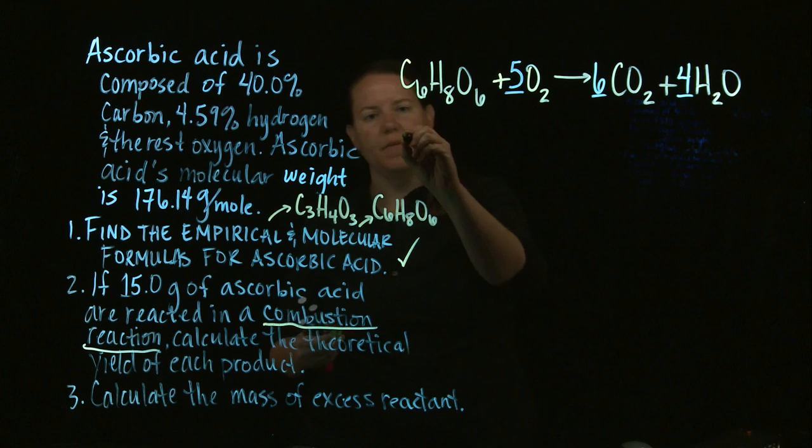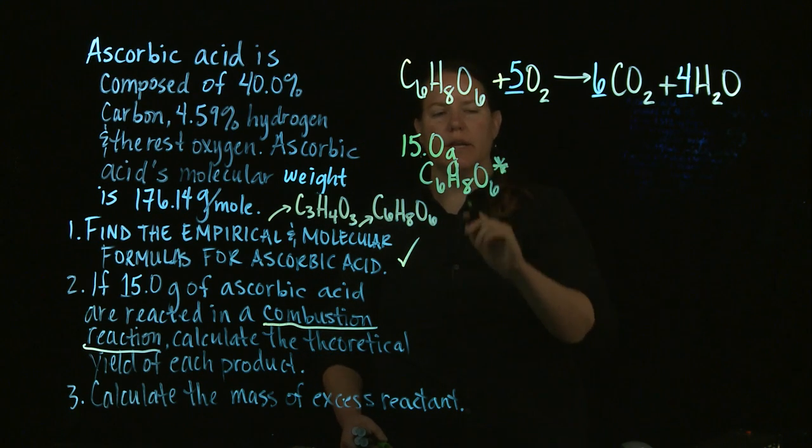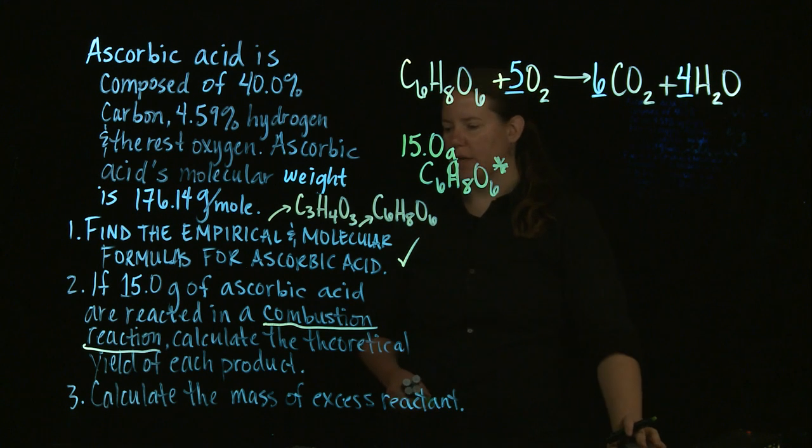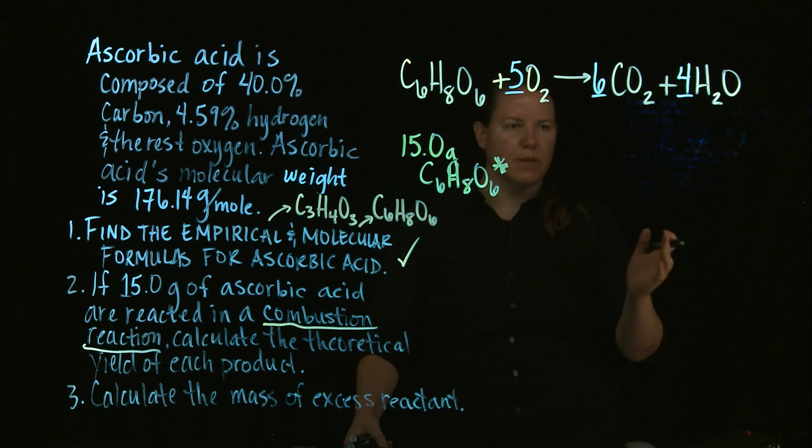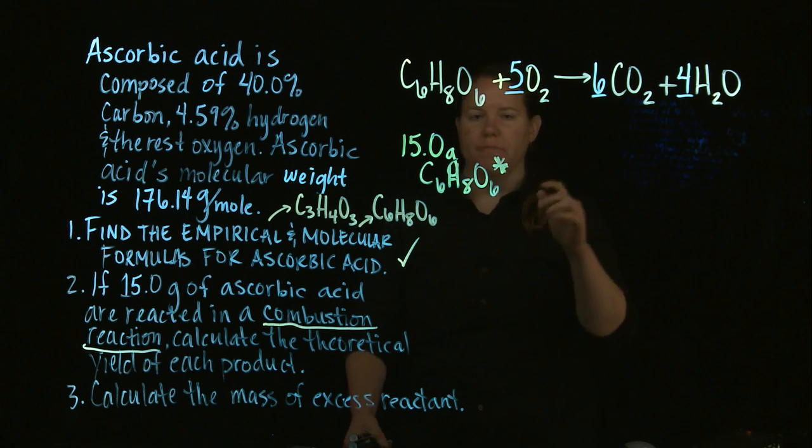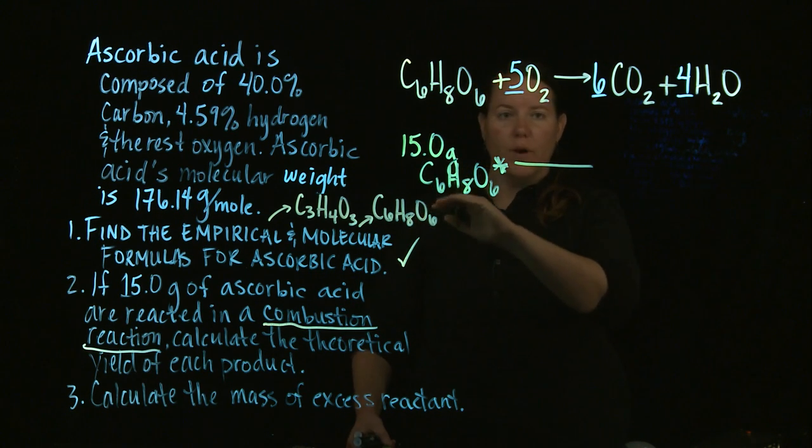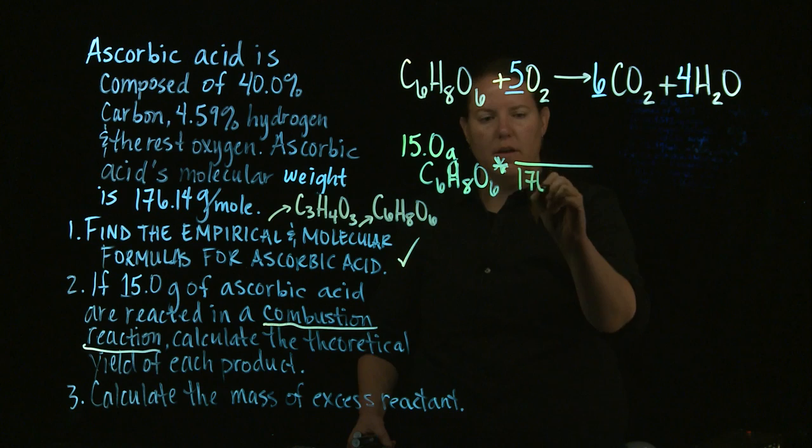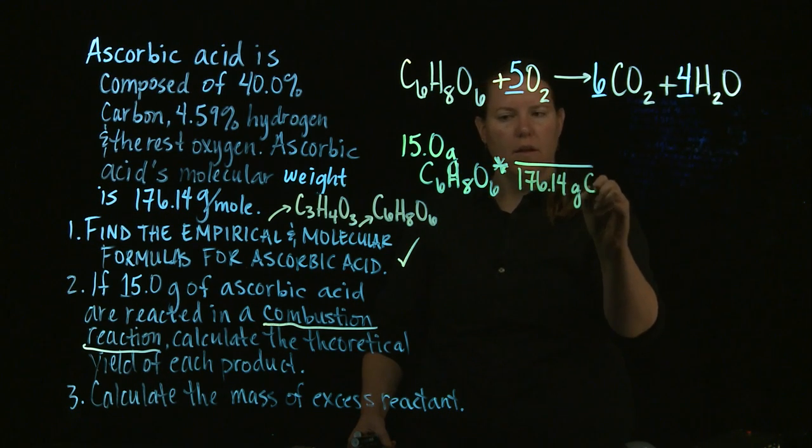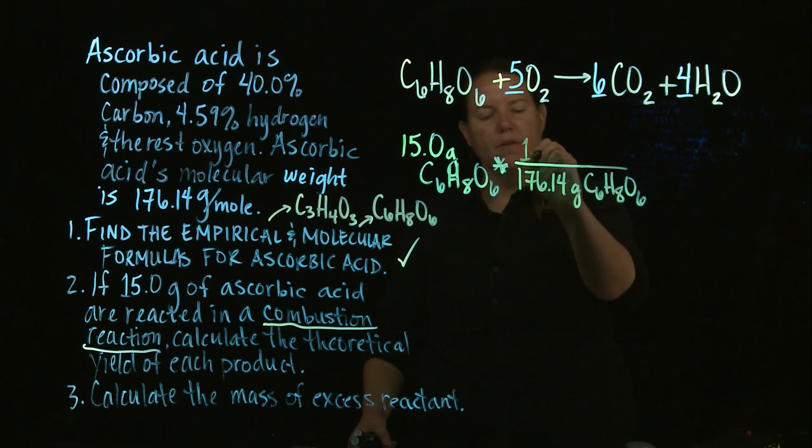Alright, now I know I have fifteen grams of ascorbic acid. And in order to do this, I need to calculate the theoretical yield of each product. In terms of the theoretical yield of each product, I need to pick one of these to begin with, because I can only do stoichiometry one at a time. So let's do CO2 first, since I wrote it down first. Okay, to do this, I'm going to take the grams of the reactant that I'm given. I'm going to divide by the molar mass of that reactant, which was given. Isn't that awesome?